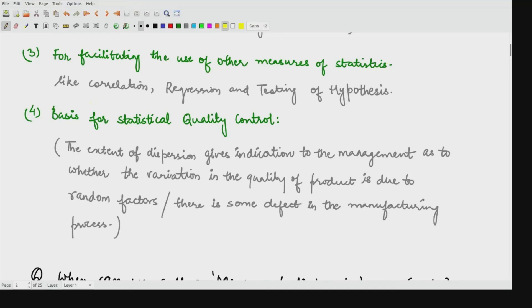Third objective is for facilitating the use of other measures of statistics. Here we will study later on about correlation and regression and testing of hypothesis. All these utilize these methods of dispersion. They will either use this standard deviation or they will utilize this mean, median, mode. Depending upon these, we will say that these measures of statistics are also useful whenever we wanted to make a particular kind of decision out of it.